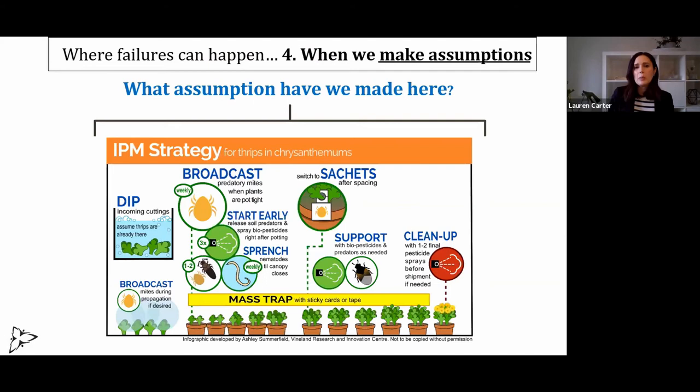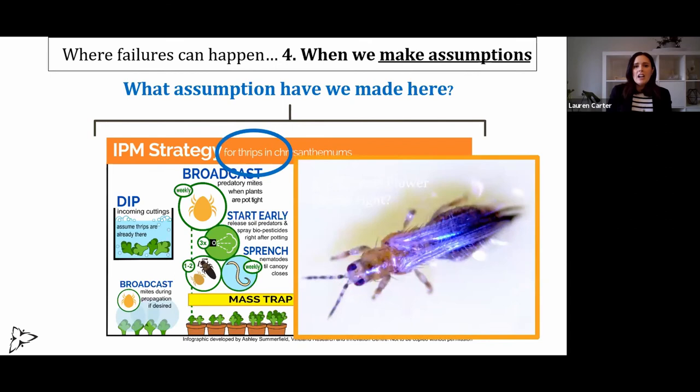The last place where thrips failures can happen is when we make assumptions. So this whole strategy we've come up with for thrips — what thrips are we talking about? We've been assuming we're talking about Western flower thrips. That's the only thrips we've got in Ontario floriculture greenhouses. Well, that turned out not to be so true.